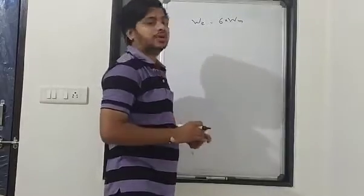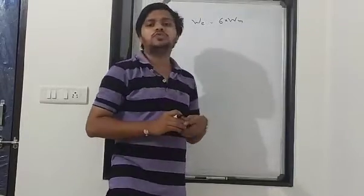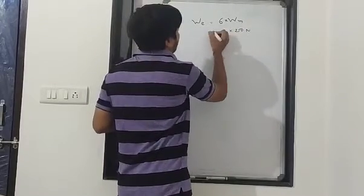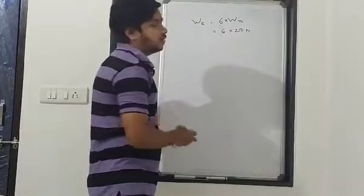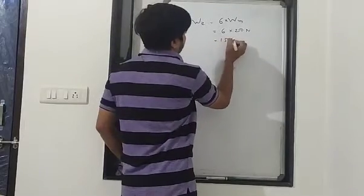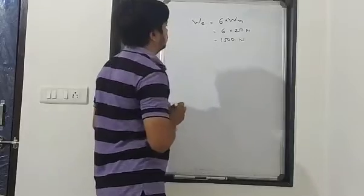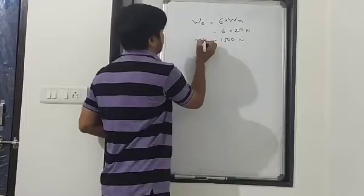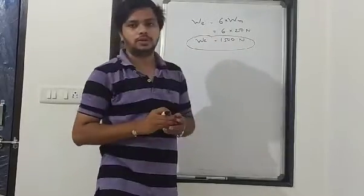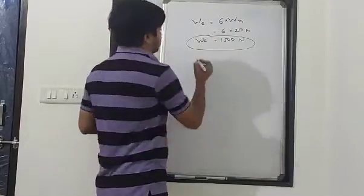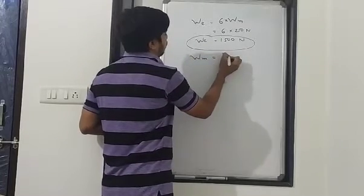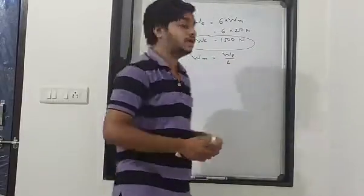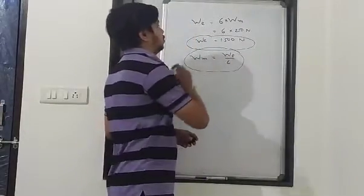For example, if the weight on the moon is 250 newton, then on earth it is 1500 newton. So generally, the weight on the moon becomes one-sixth of the weight on earth. If you divide the weight on earth by six, you get the weight on the moon.